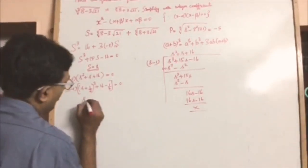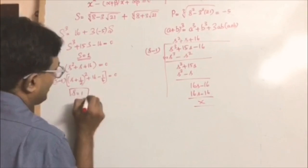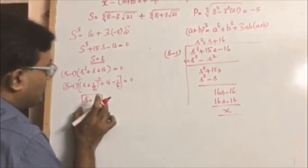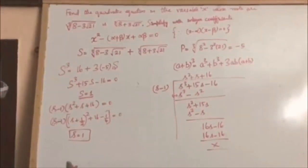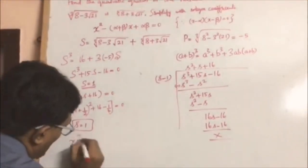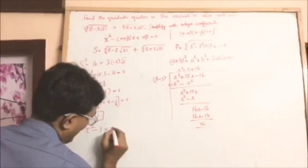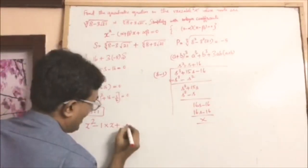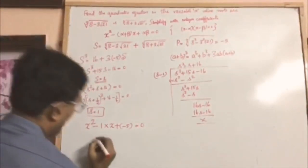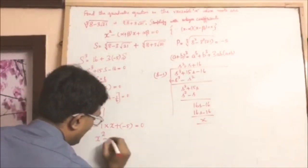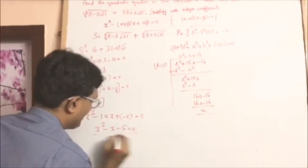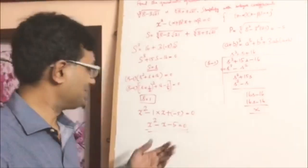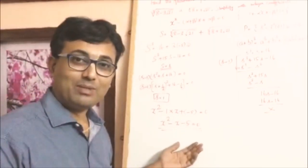Going back to the quadratic equation and substituting: x squared minus the sum of roots (which is 1) times x plus the product of roots (which is minus 5) equals 0, giving us x squared minus x minus 5 equals 0. This is the equation we are looking for. Thanks for watching — please share your comments.